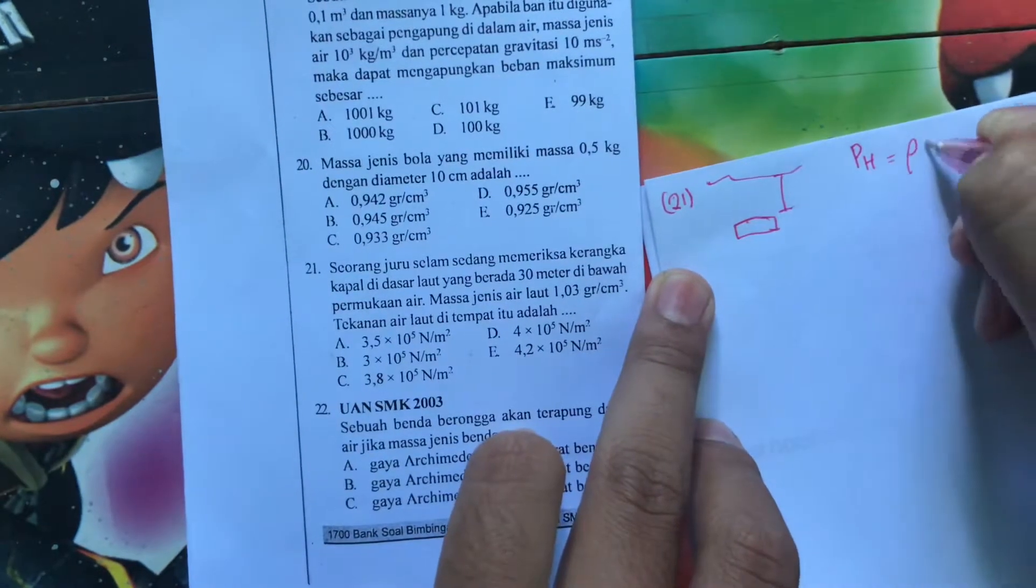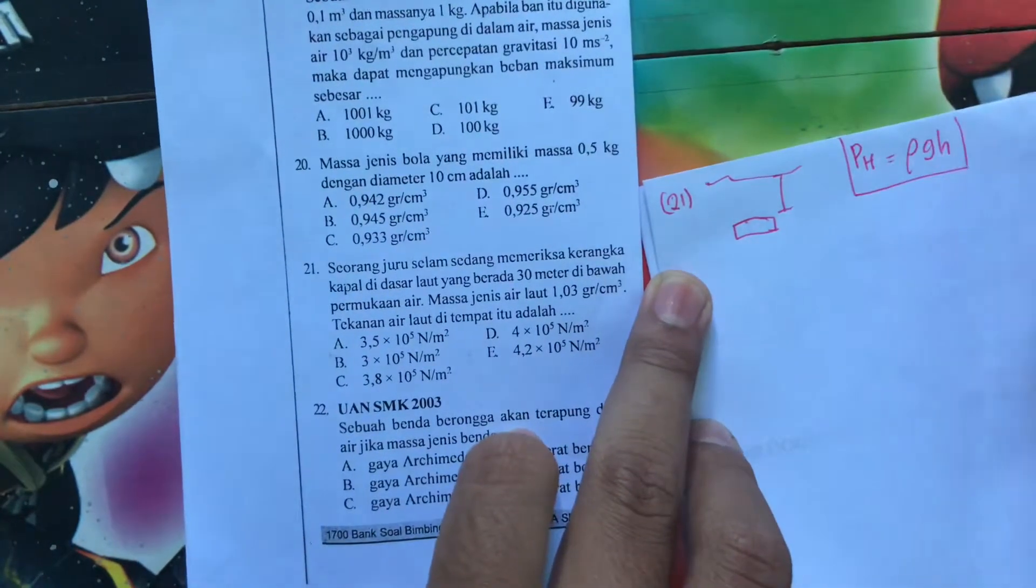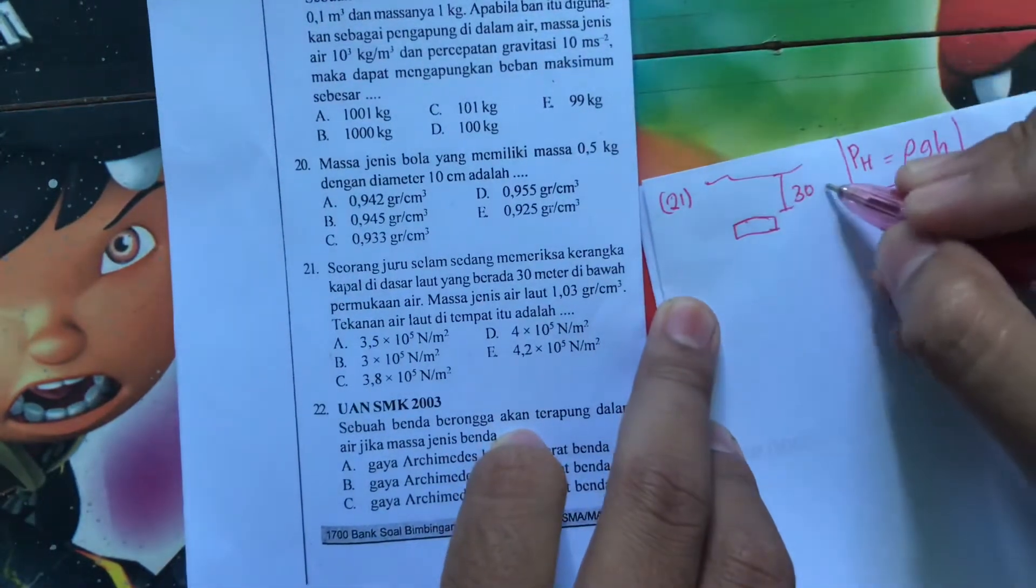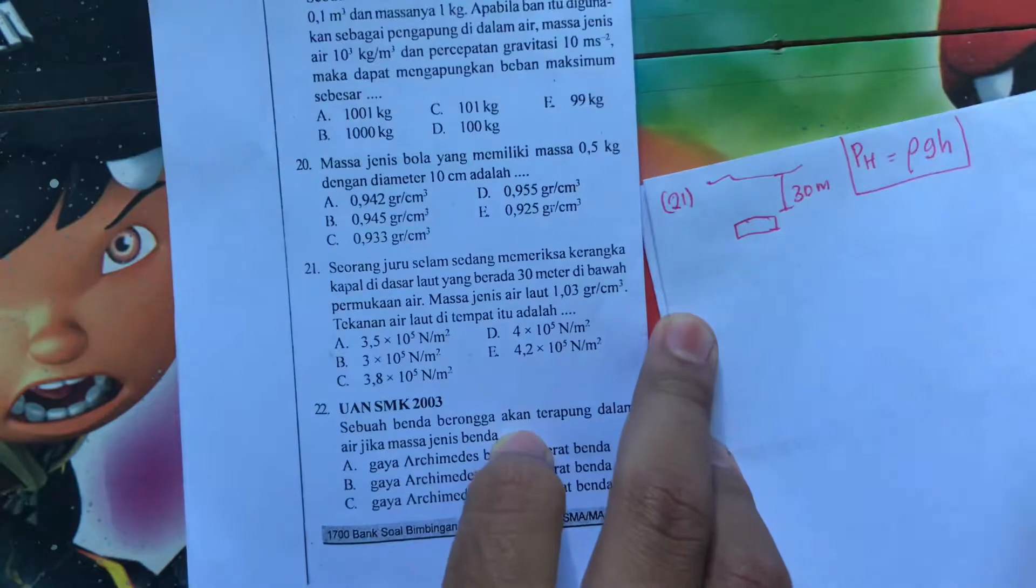Rumusnya apa? Rho, G, H. Ini kan tekanan hidrostatis. Yaudah, kita bisa dapat nilainya dengan kedalaman 30 meter.